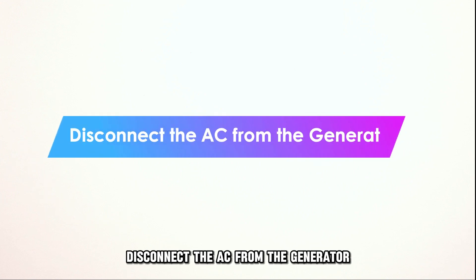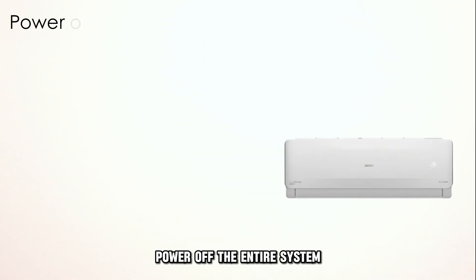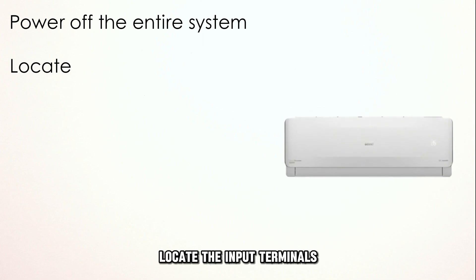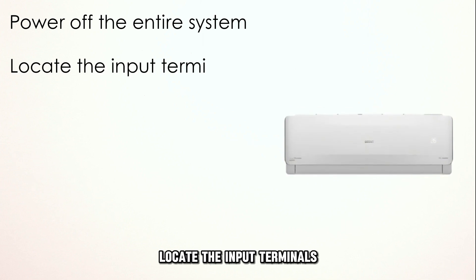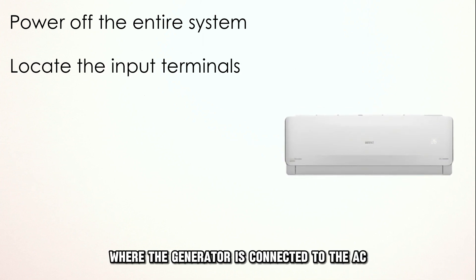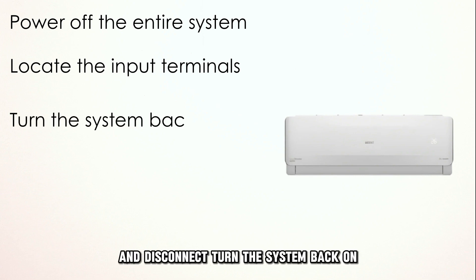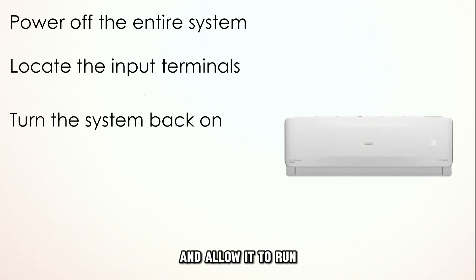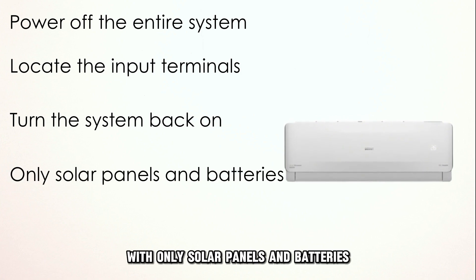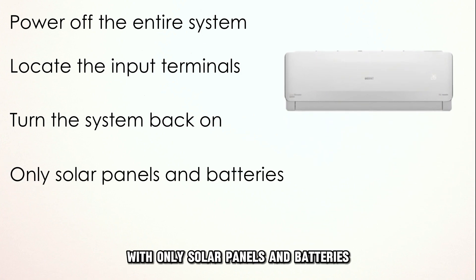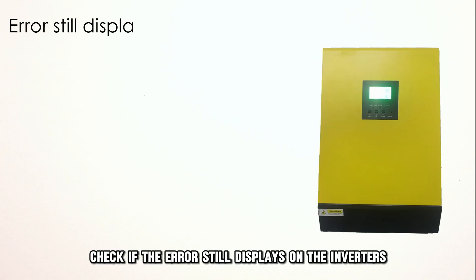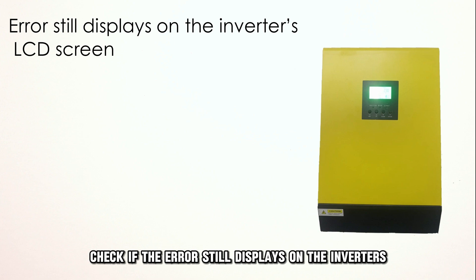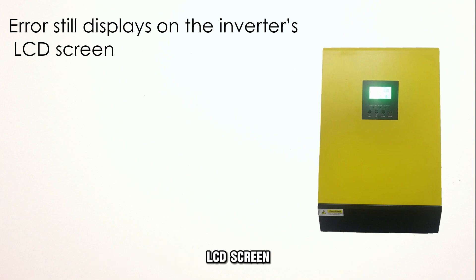Disconnect the AC from the generator and power off the entire system. Locate the input terminals where the generator is connected to the AC and disconnect. Turn the system back on and allow it to run with only solar panels and batteries, then check if the error still displays on the inverter's LCD screen.